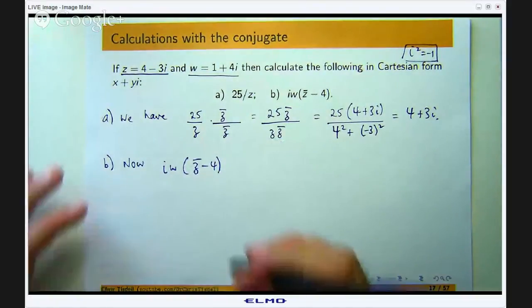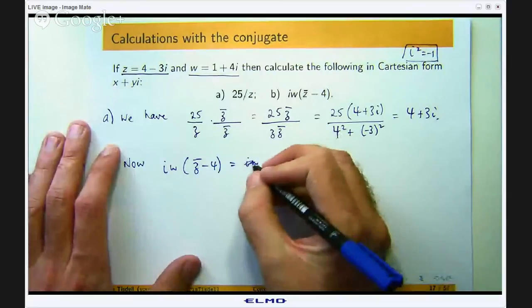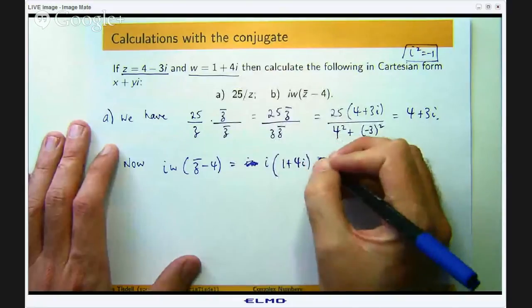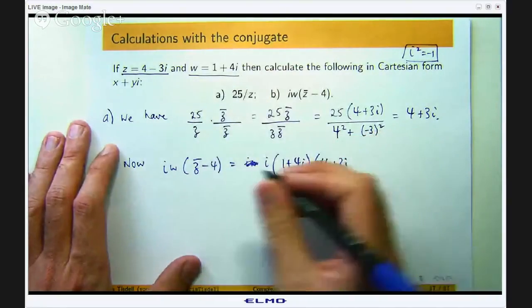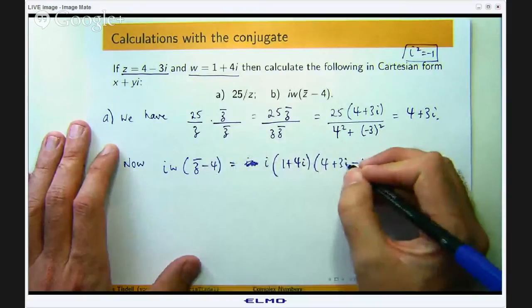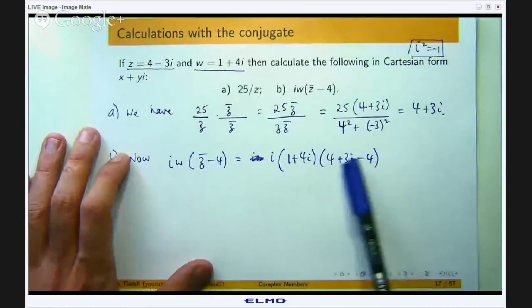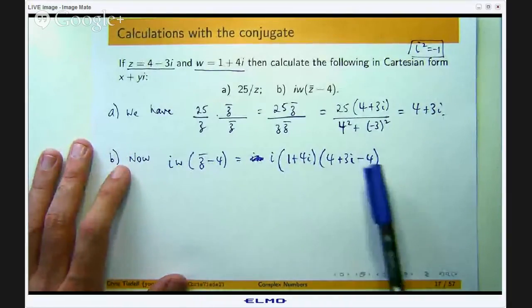So Z bar minus 4, oops sorry let me write out i and w. So w is 1 plus 4i, Z bar is 4 plus 3i minus 4. So I can see straight away that the 4 is going to cancel. So I will be left with i bracket 1 plus 4i times 3i.